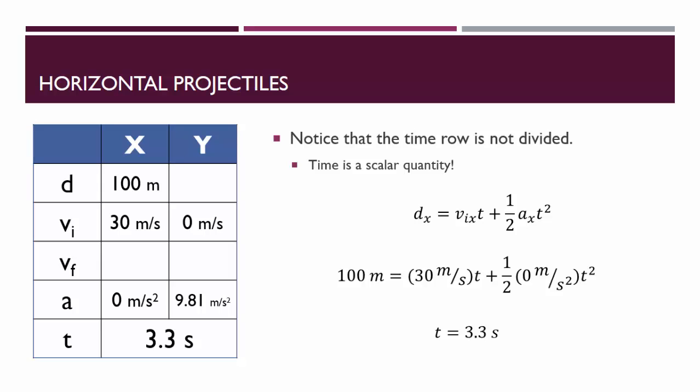This means that it took 3.3 seconds to travel 100 meters horizontally, but it also took the car 3.3 seconds to travel its vertical displacement, which we'll calculate now.